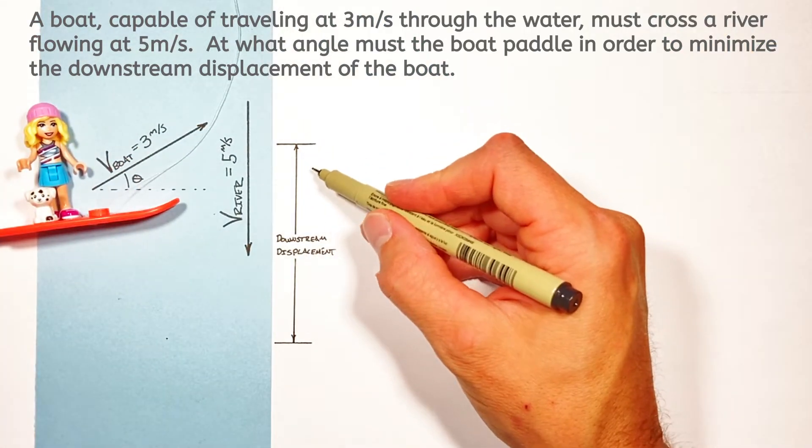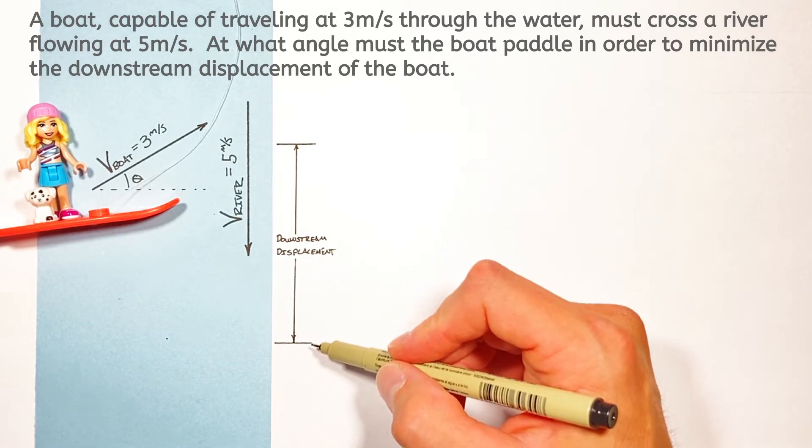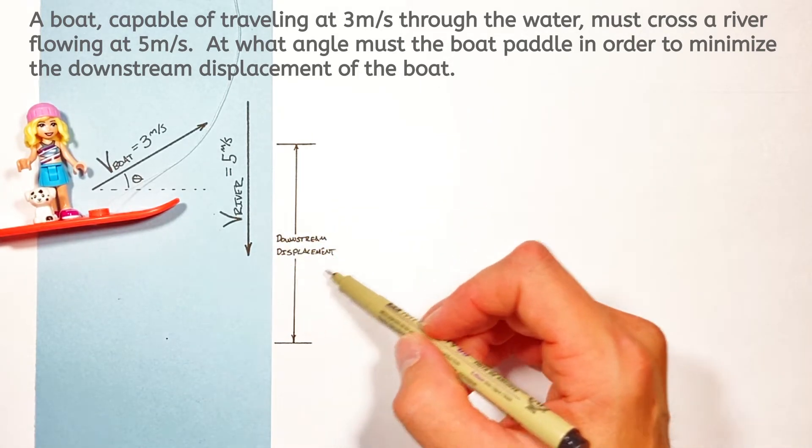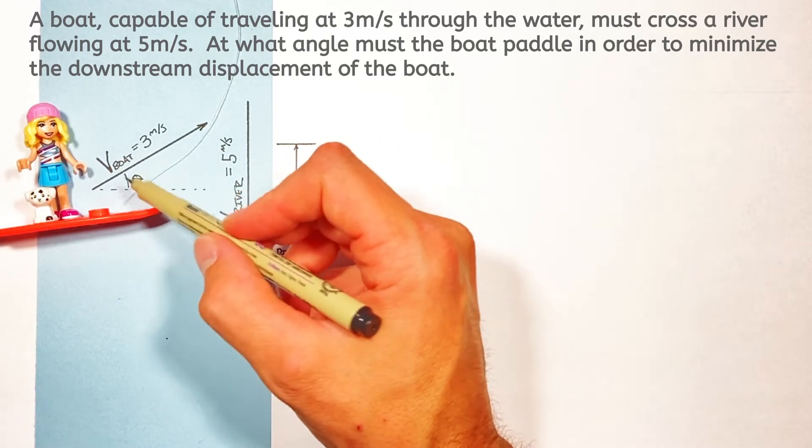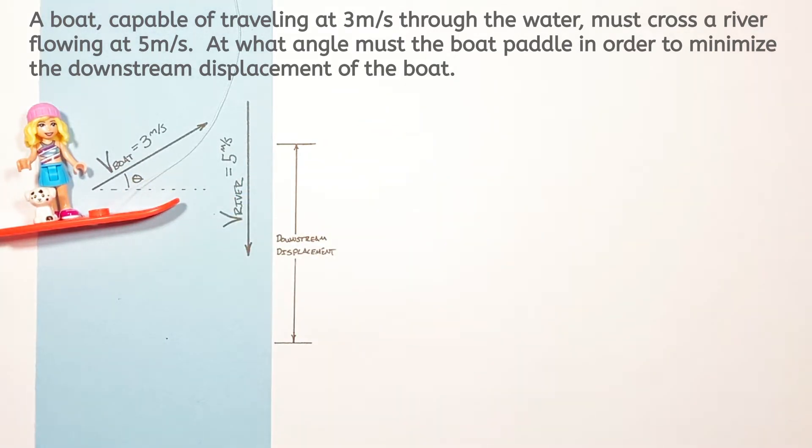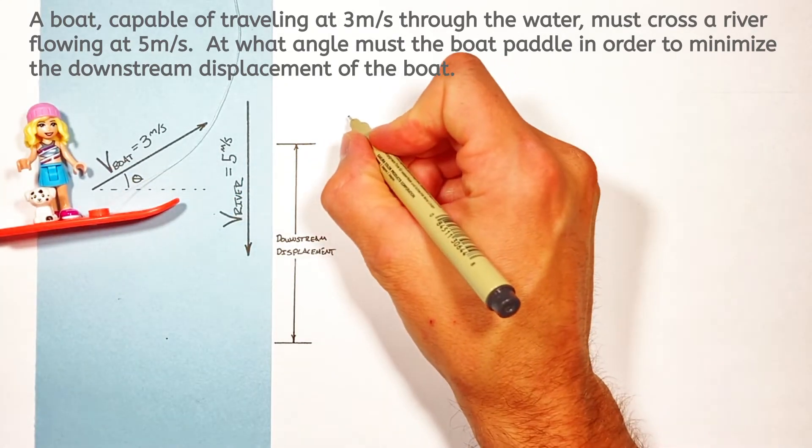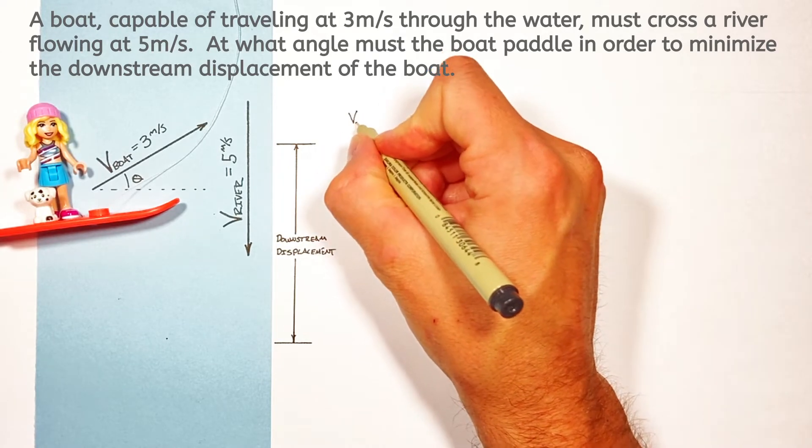So if we're trying to minimize the downstream displacement of this boat as it crosses the river, we first need to come up with an expression that relates the displacement to the angle at which the boat is pointed upstream. And to do that I want to look at the velocity of the boat in both the X and Y axis.